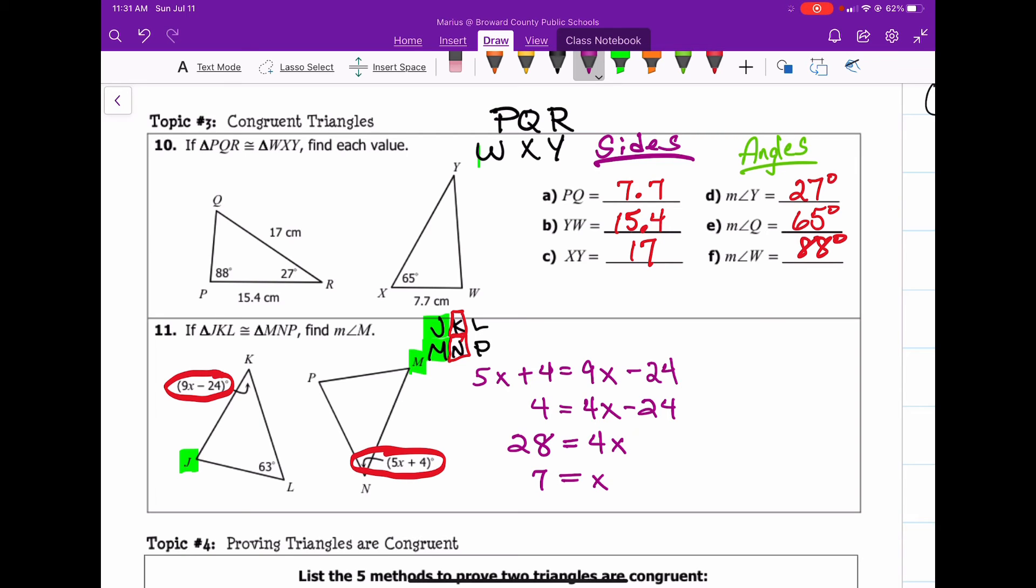Now that I've solved for X, I still want to figure out what angle K and angle N are equal to. So I only have to plug 7 in for X into one of those. So I'll go ahead and choose angle N. So that's 5 times 7 plus 4. 5 times 7 is 35. 35 plus 4 is 39. And now I'm going to place that 39 right here. So that's 39 degrees. This is 39 degrees.